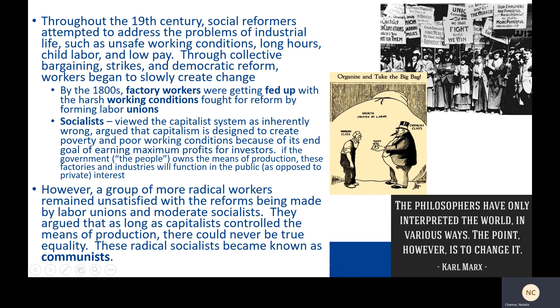Throughout the 19th century, as we've seen in previous lessons, social reformers tried to address the problems of industrial life, like unsafe working conditions, long hours, child labor, and low pay that stemmed from this capitalist drive to increase products for the business owner. Through collective bargaining and strikes and democratic reform, workers slowly began to create some change.